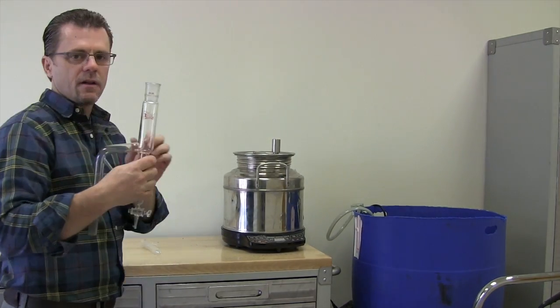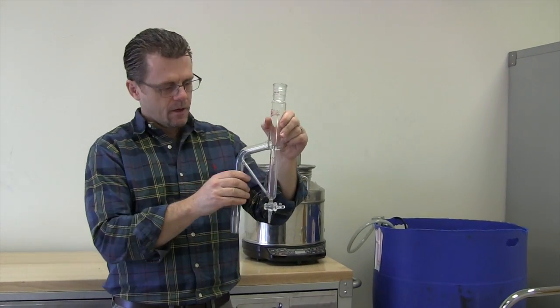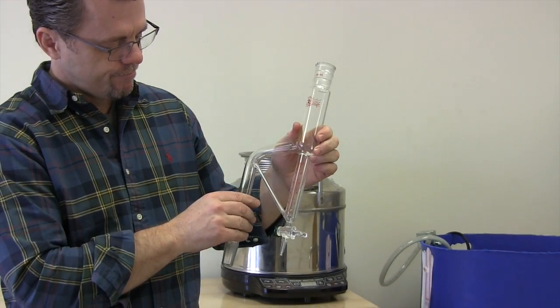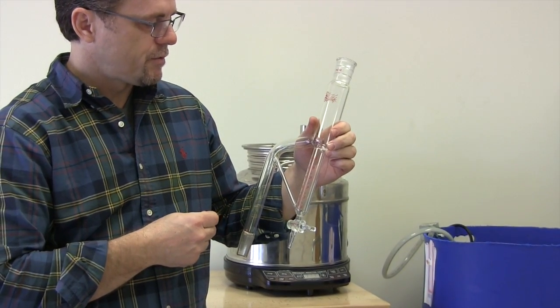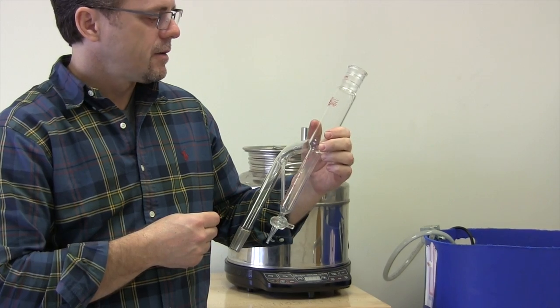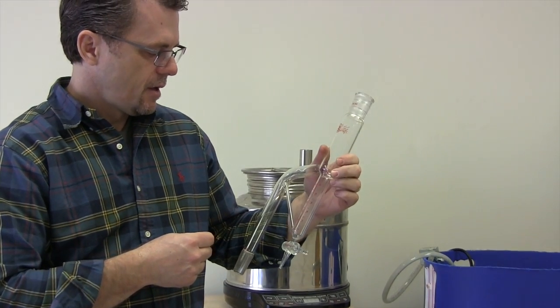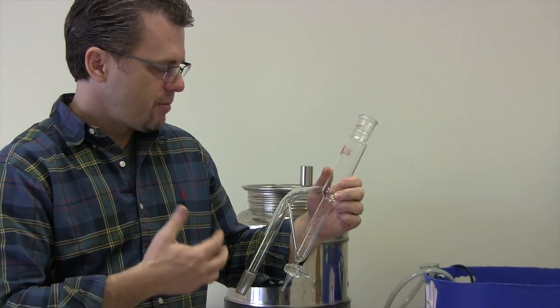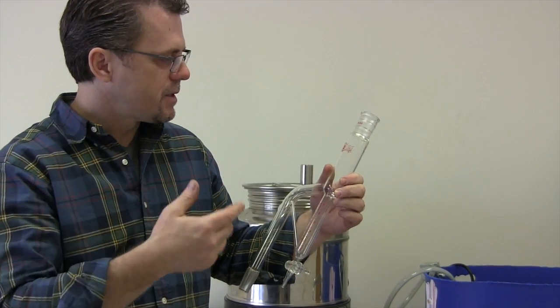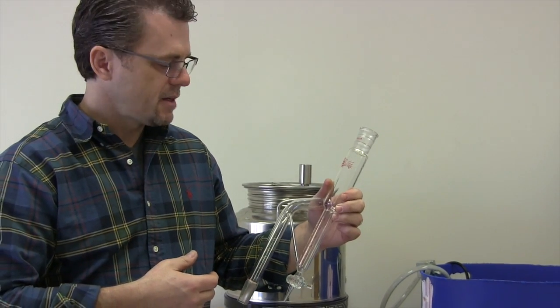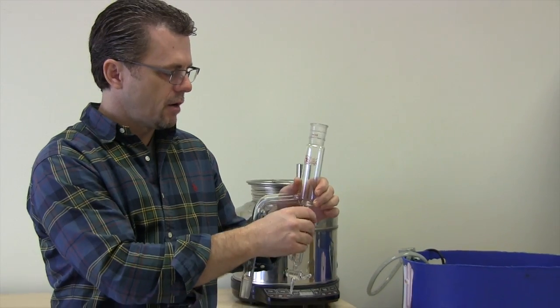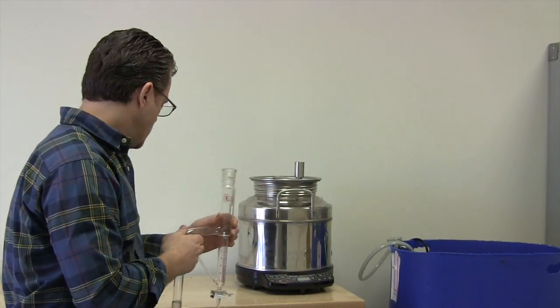This is our Clevenger, which is an old device used for small-scale hydro distillations. It works very nicely. I've modified it a little bit over what's available from stock glass houses to make this bigger and have a bigger condenser.